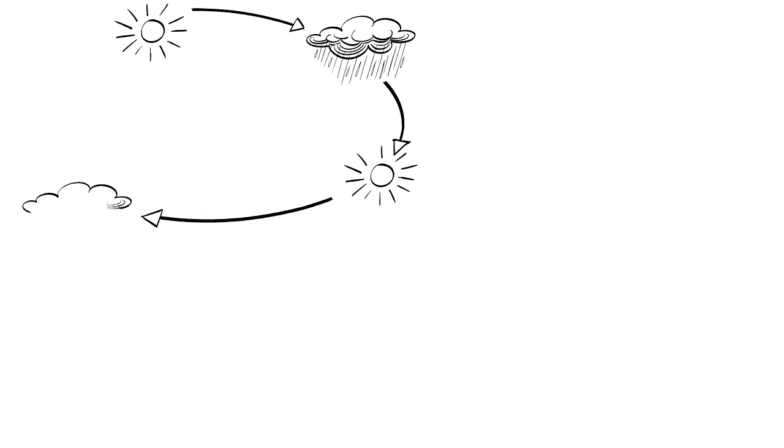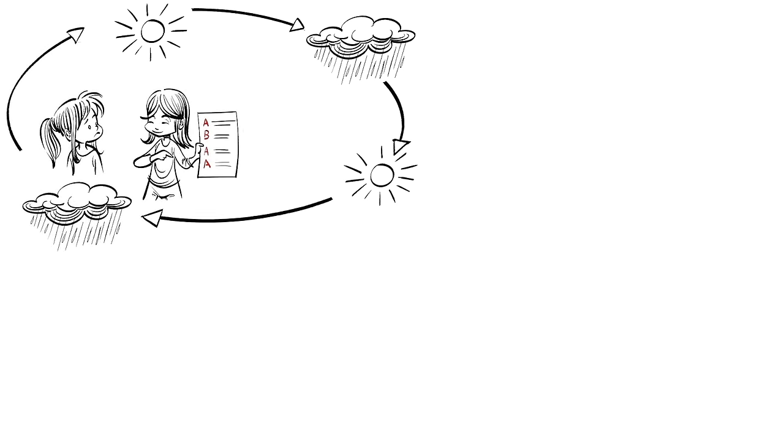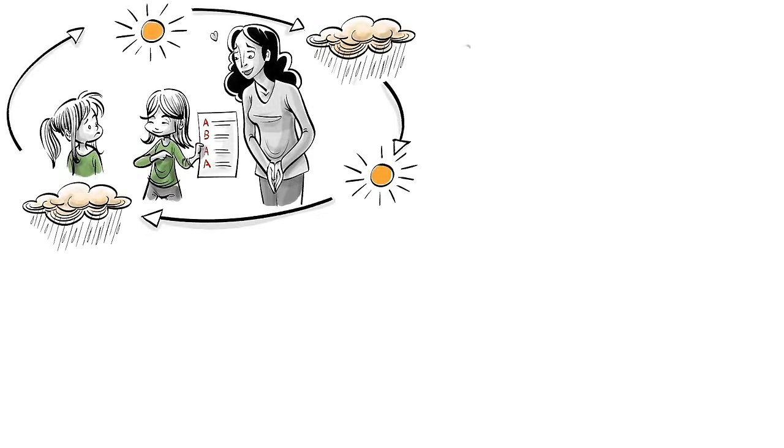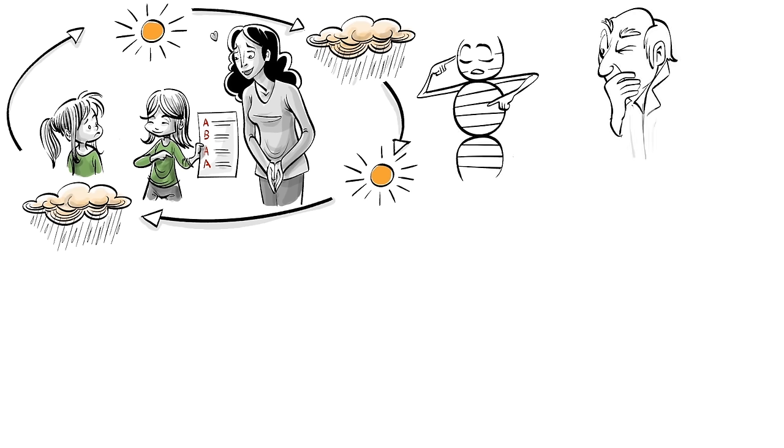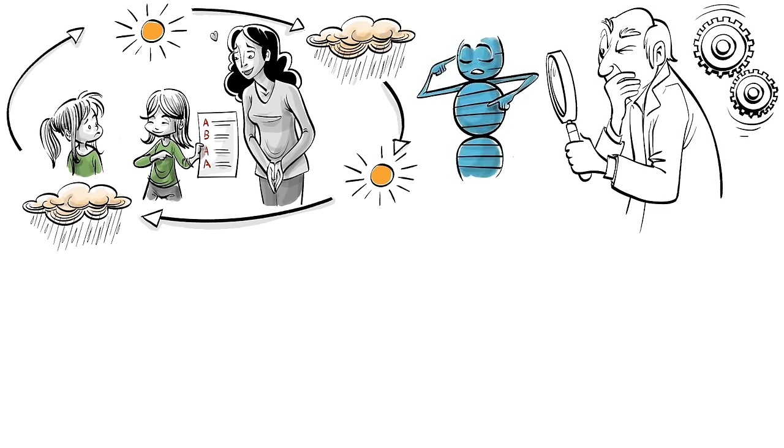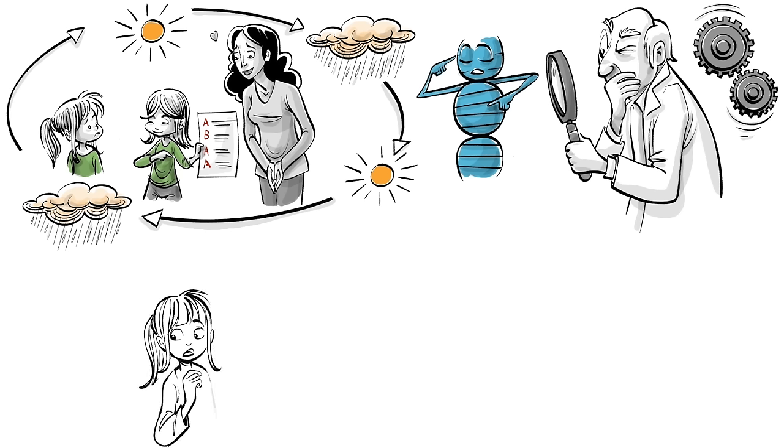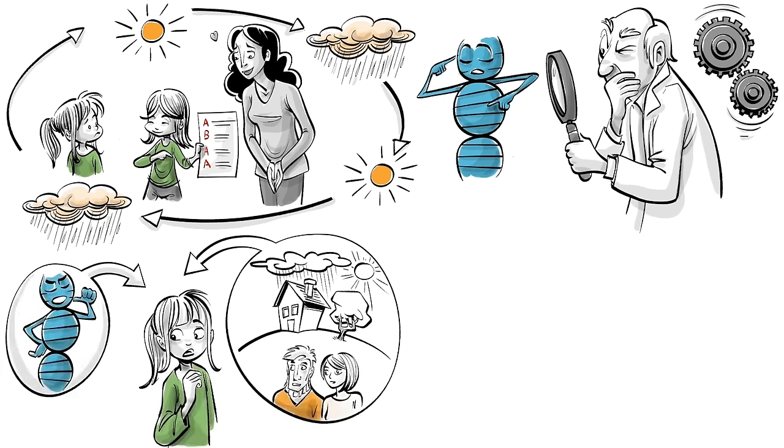To understand the two forces, we need to acknowledge that environmental influences are often random. Siblings experience home very differently. And we need to recognize that genes are complex. There is no single gene doing a single thing.